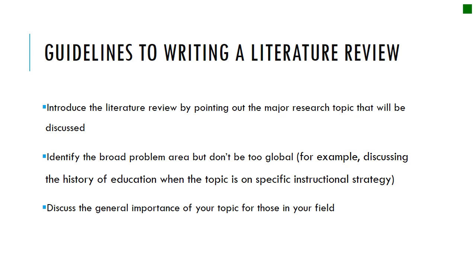Some guidelines for writing a literature review: you've got to start by pointing out what your overall major research topic is going to be. Then you're going to identify the problems. Sometimes you can start at the global level and bring it down to the micro level, but hopefully you want to start with a manageable problem. Then you have to talk about why it's important for you to do this research.